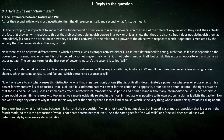Now, if one were to ask what causes this distinction — why nature is only of one, meaning of itself determinately a power for whatever effect it is a power for, whereas will is of opposites, meaning of itself indeterminately a power for this action or its opposite, or for action or non-action — the right answer is that there is no cause. For just as an immediate effect is related to its immediate cause per se and primarily without any intermediate cause, since otherwise there would be an infinite regress, so too an active cause is related in the most immediate way possible to its own action insofar as it elicits that action. Nor are we to assign any cause of why it elicits in this way, other than simply that it is that kind of cause.